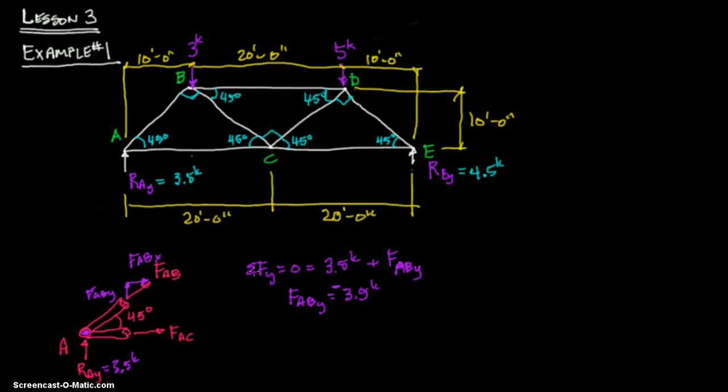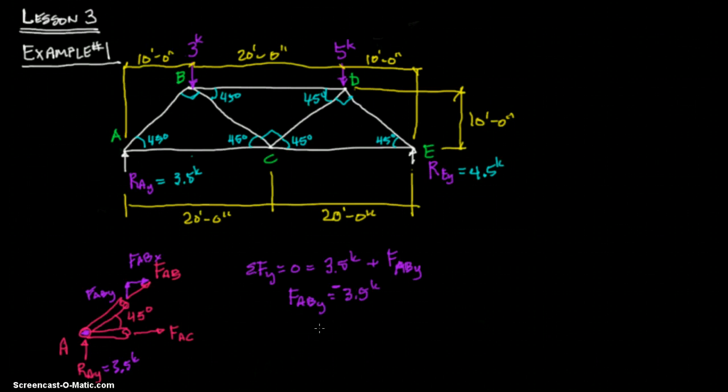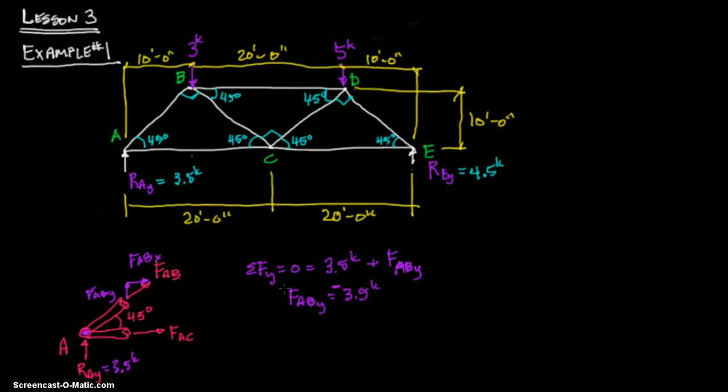Welcome back to General Structures 2 and Lateral Forces Lesson 3, Example Number 1. This is the second video. We left off calculating forces using the method of joints, and we've gotten through joint A where we found the force of AB in the Y direction. Now we need to figure out what the force of AB in the X direction is and so forth.